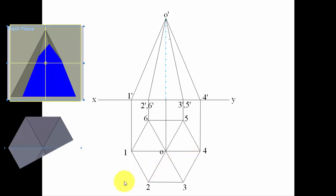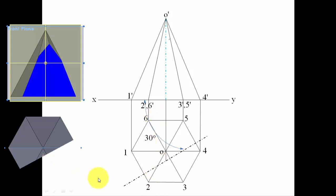Now you can see the cutting plane in the top view, as shown earlier in the SolidWorks software. It is 7 millimeters from the axis and passes through a point with a cutting plane at an angle of 30 degrees with the vertical plane. The cutting plane is intersecting the solid at certain points: base edge 1-2 is cut at point A, slant edge O2 is cut at point B, slant edge O3 is cut at point C, slant edge O4 is cut at point D, and base edge 5-4 is cut at point E.